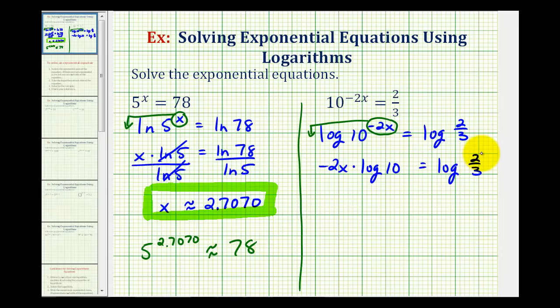Now the reason I wanted to use common log on this example was because the common log of 10 is equal to 1. So we could just drop this, but I'm going to go ahead and leave it in just in case we didn't recognize that. So now to solve for x, we'd have to divide both sides of the equation by negative 2 log 10.